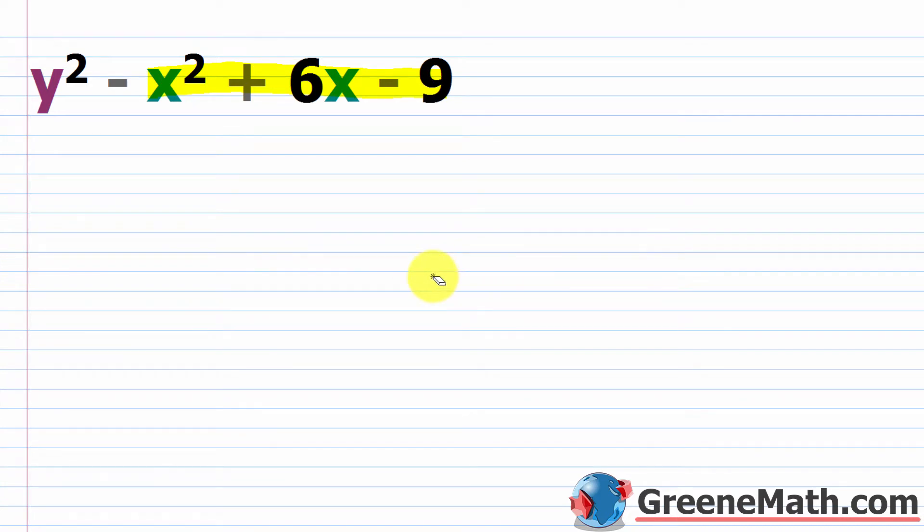So first, let's tackle the problem of how do we change the form here. Well, we're just going to factor out a negative.